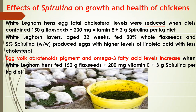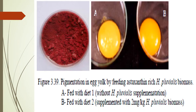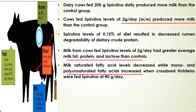Regarding the effect of spirulina on the growth and health of chickens: when chickens are fed with algal culture, a noticeable decrease in cholesterol level has been seen. Egg yolk carotenoid pigments and omega-3 fatty acid levels were increased. When chickens were fed with astaxanthin-enriched biomass of Haematococcus pluvialis, enrichment of pigment in the egg yolk was observed compared to the control.